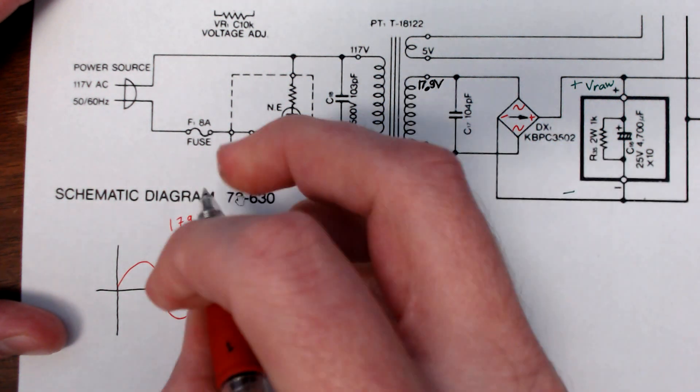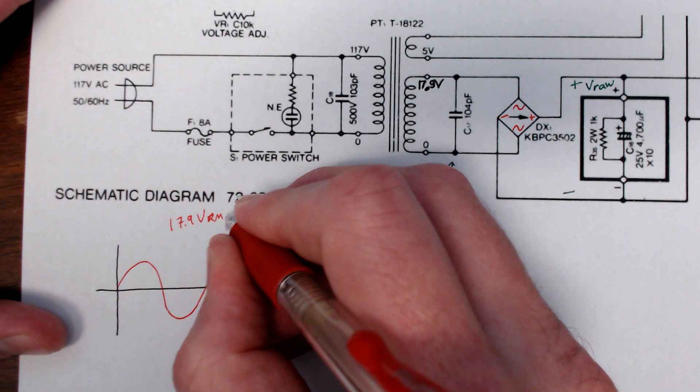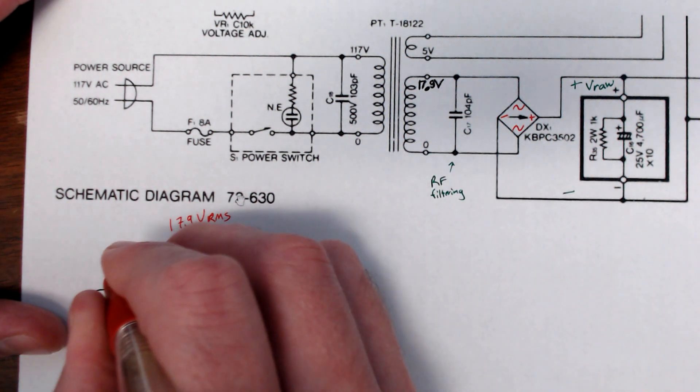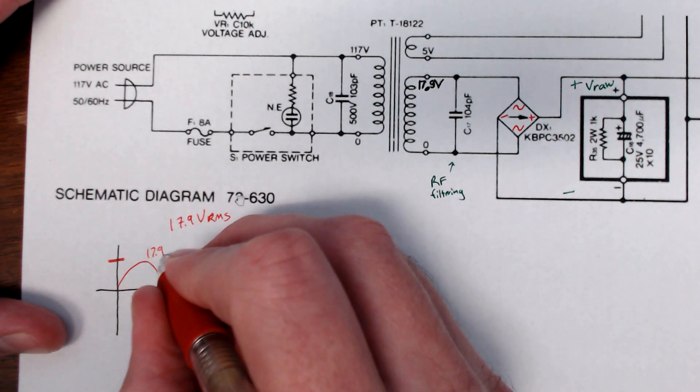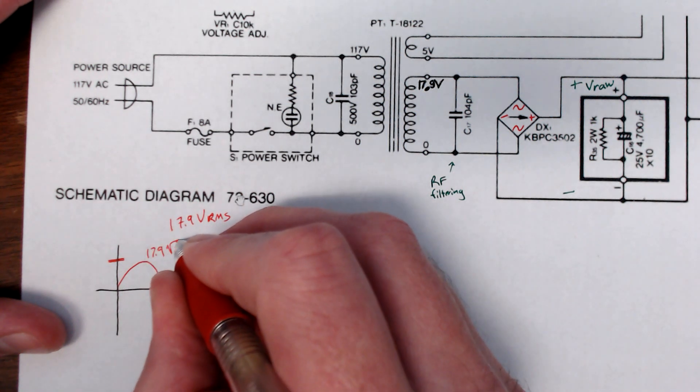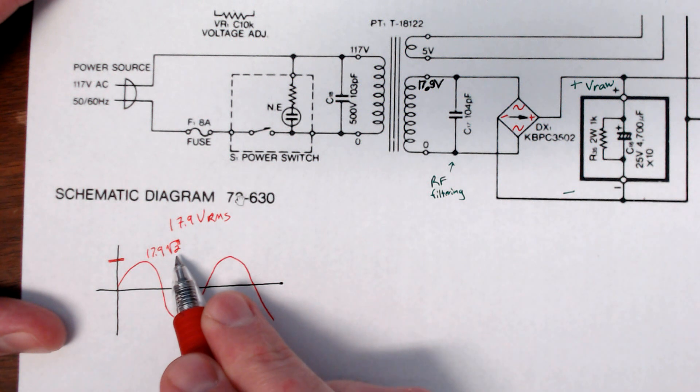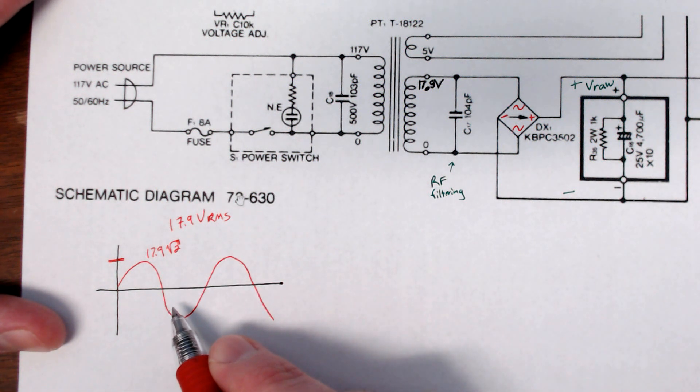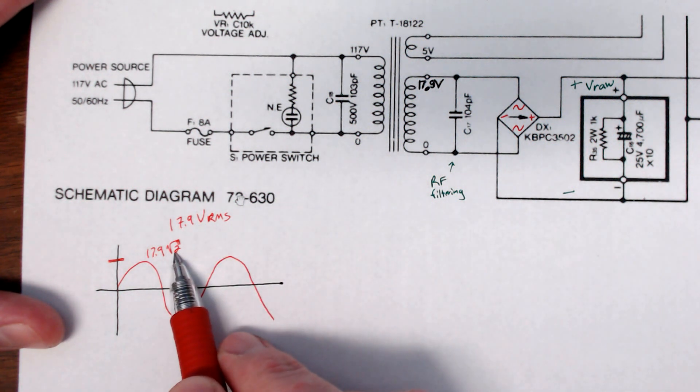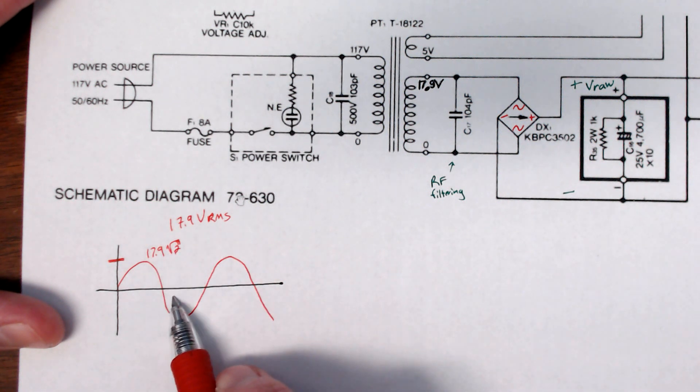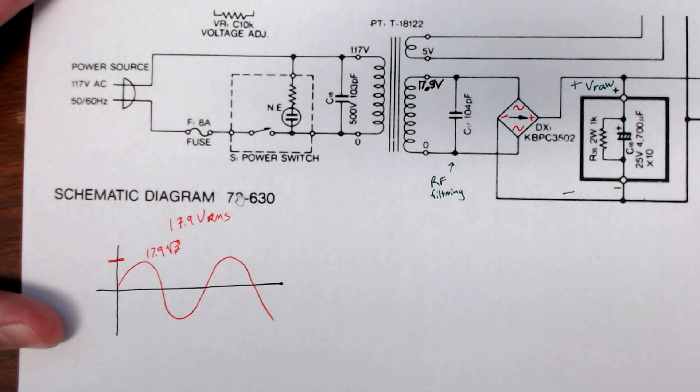And this is 17.9 volts. Remember when we just say this, this is really talking root mean squared quantity. So the peak value here is going to be 17.9 times square root of 2. Square root of 2 is only valid if your waveform is actually a sine wave. If it's a triangle or a square or anything other than a sine, square root of 2 doesn't work. It means square root of 2 means it's a sine wave shape. That's super important but easy to forget because we use sine waves all the time.